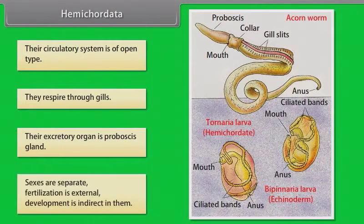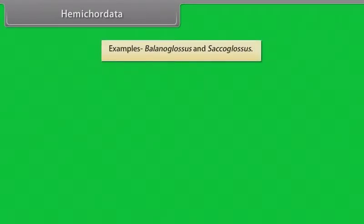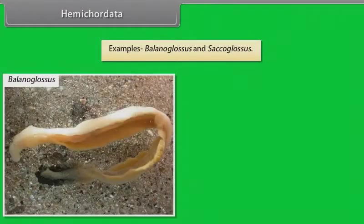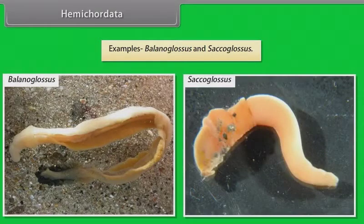Their excretory organ is the proboscis gland. Sexes are separate. Fertilization is external. Development is indirect. Examples: Balanoglossus and Saccoglossus.